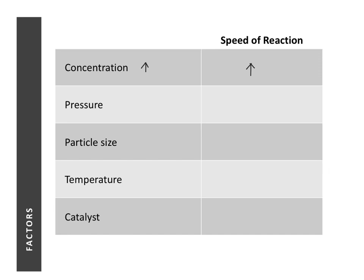When the pressure of a system of reacting gases increases, the speed of reaction will increase. When the particle size of solid reactants decreases, the speed of reaction will increase. When the temperature of a reacting system increases, the speed of reaction will increase. And when a catalyst is used in a reaction, the speed of reaction will increase.